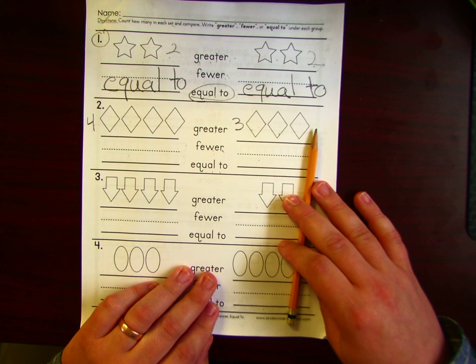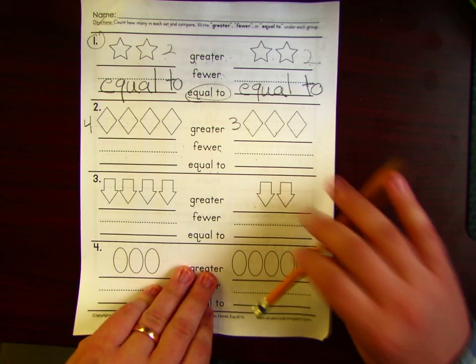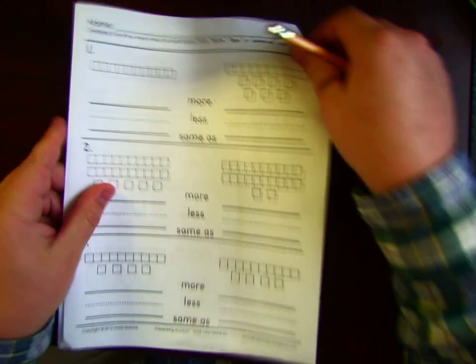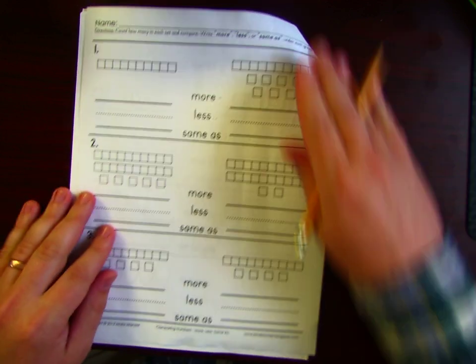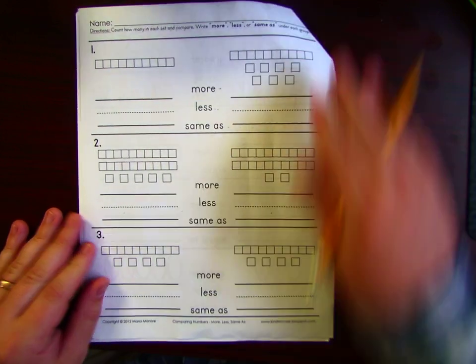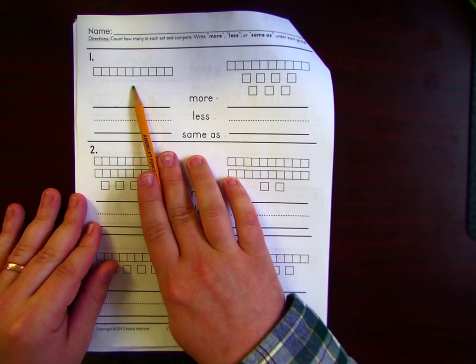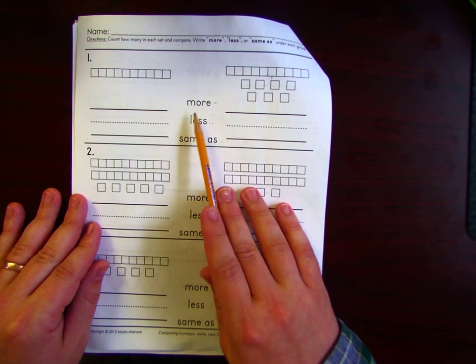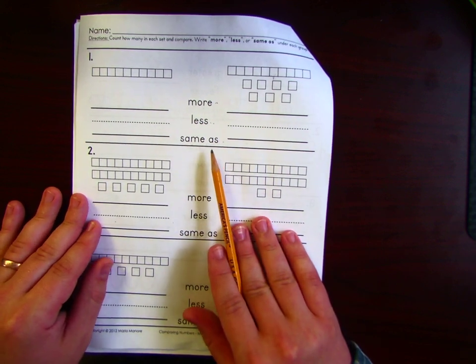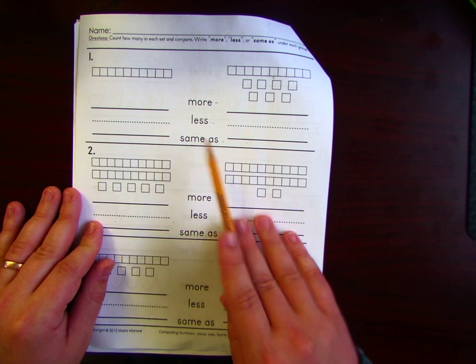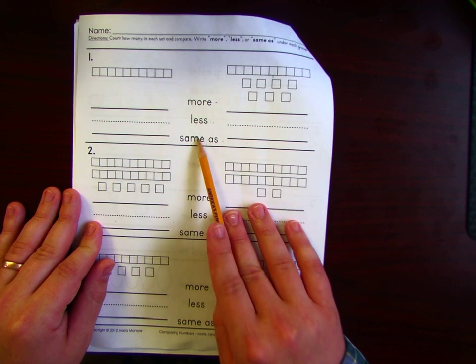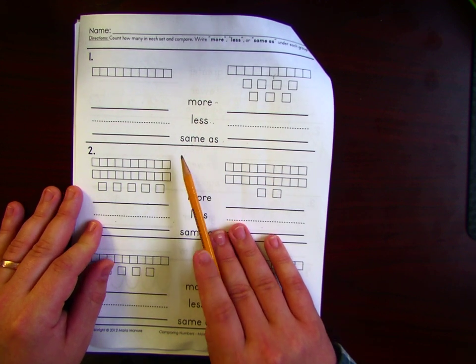Alright. Are you ready? Here we go. Let's go to the next page. On the back page, you see that we have different objects. And we have some different words. We're going to be doing a similar thing. So we will choose the correct word to compare our numbers.